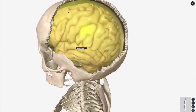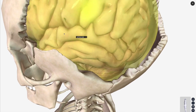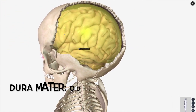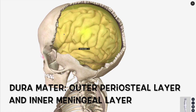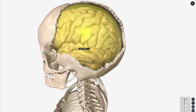The dura mater is the first meningeal layer we're going to encounter if we remove the skull and look at the brain. The dura mater is going to be split into two layers: your outer periosteal and your inner meningeal. So the extradural hematoma is going to be between the outer periosteal and the skull.